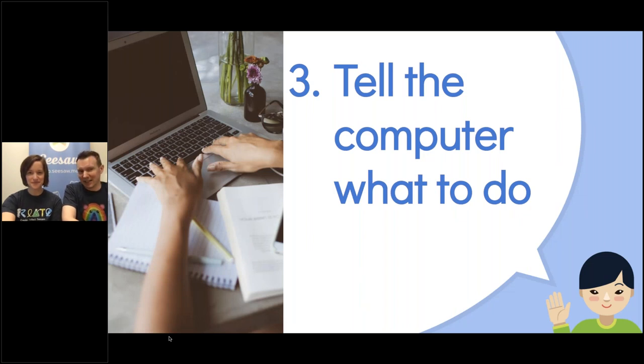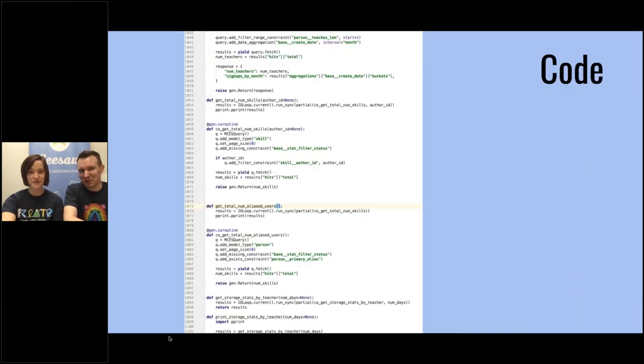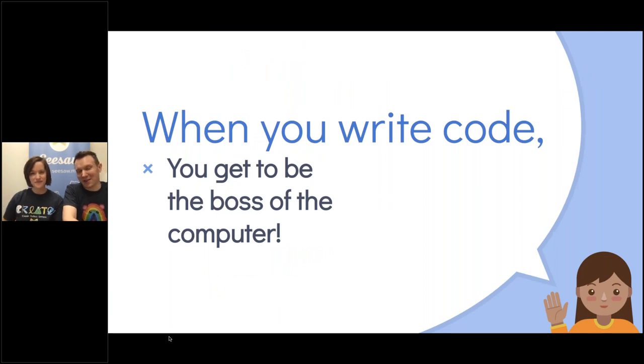Once you have an idea then of what you want to do, you have your plan together, you have to tell the computer what to do. And just like people can read books and you read the words on the page, computers can also read. They can't read books, but they can read code. And this is an example of some code. This is actual code that we run at Seesaw. And these are the instructions that tell the computer what to do. The great thing about telling the computer what to do is it will do exactly what you tell it to. So you get to be the boss of the computer.